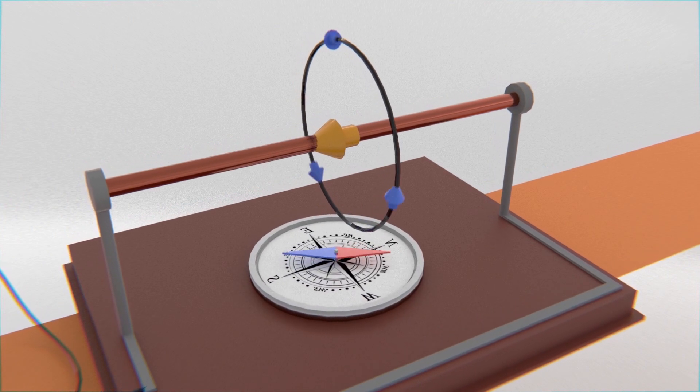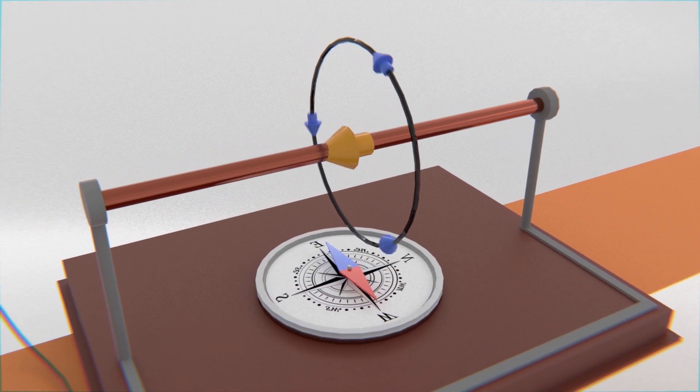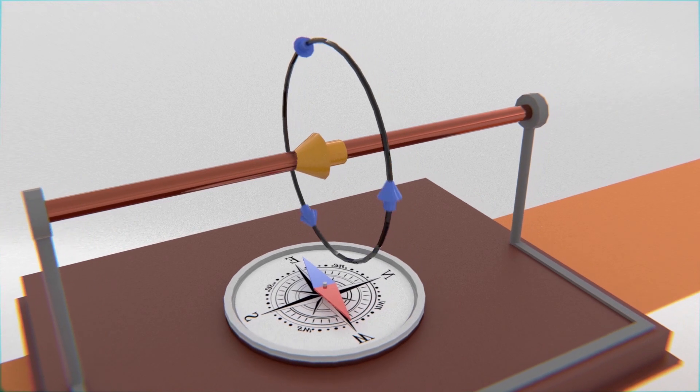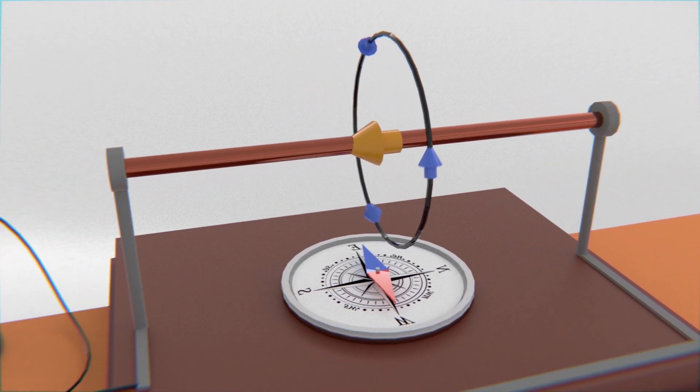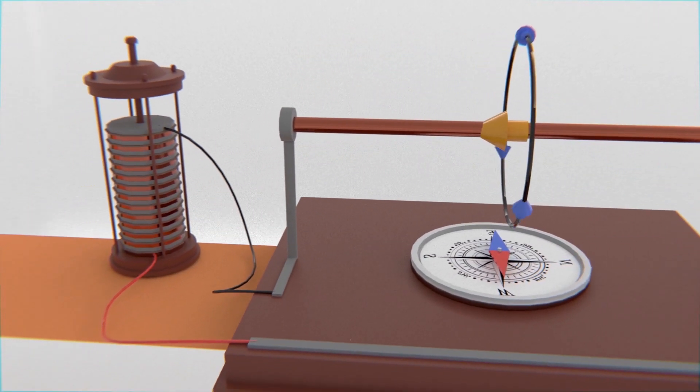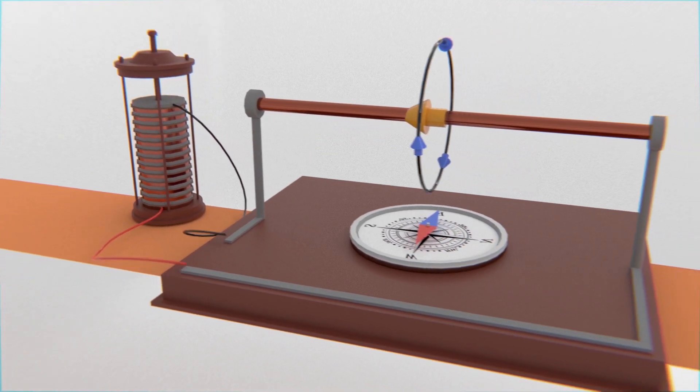The magnetic field generated by the current motion interacts with the magnetic field which is generated by other charges, like the one by this compass, causing them to try to align.